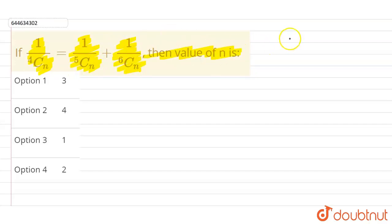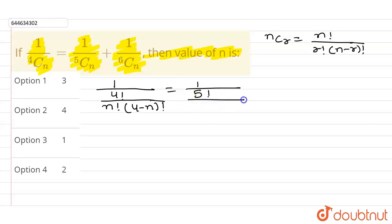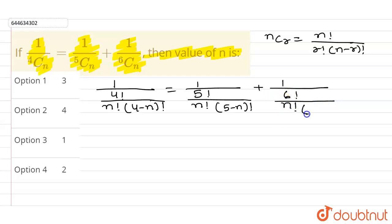So here, 1 upon 4Cn. We know that nCr equals n factorial upon r factorial into (n minus r) factorial. So I can write it as: 1 upon 4Cn becomes 4 factorial upon n factorial into (4 minus n) factorial, equals 1 upon 5 factorial upon n factorial into (5 minus n) factorial.